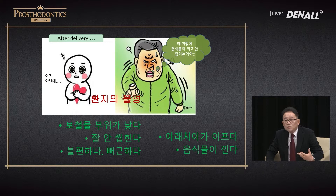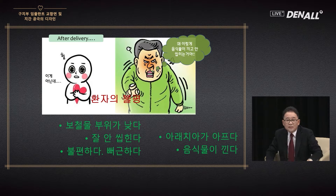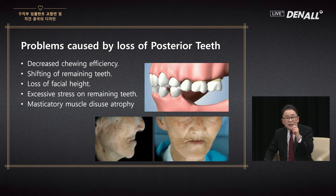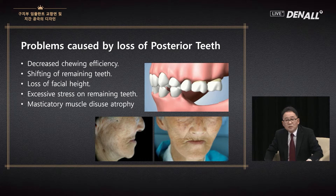Regarding occlusion, the prosthesis seems low and the patient cannot chew properly. We need to think about whether we provided a prosthesis that is too low, with an occlusal table too small. The loss of posterior teeth creates many problems — we already know about the shifting of remaining teeth and the lack of vertical height.